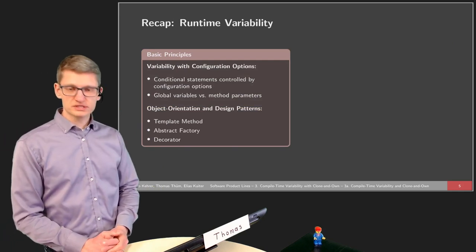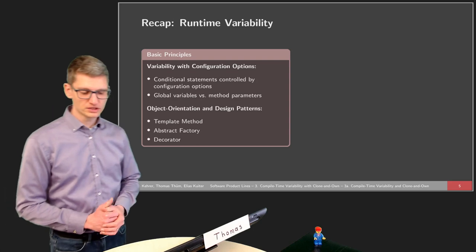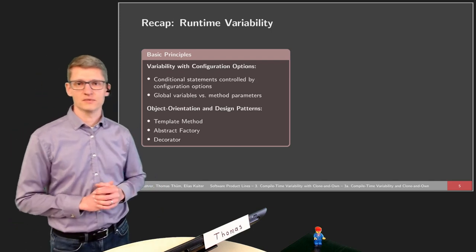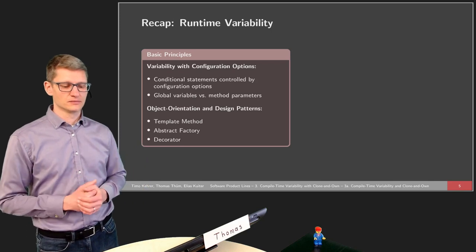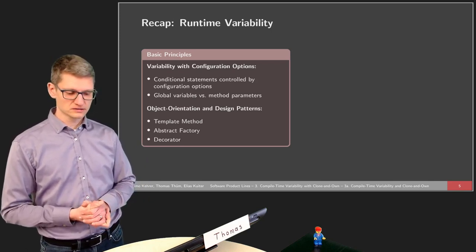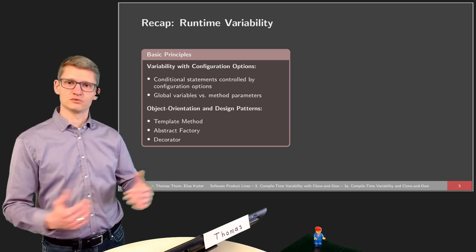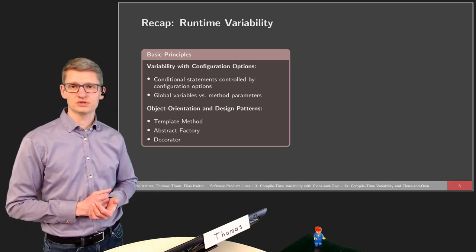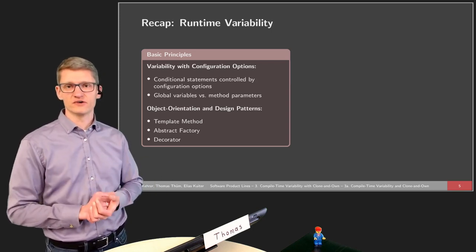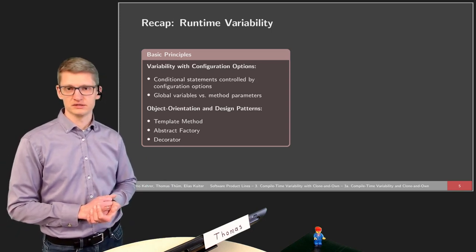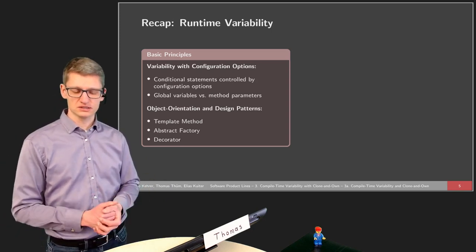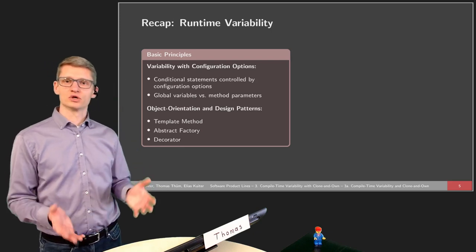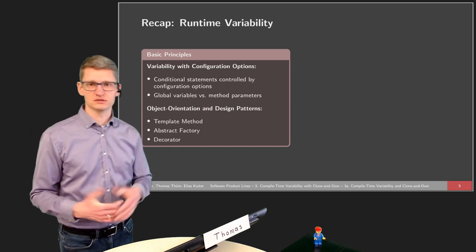Looking at the basic principles of runtime variability: we have variability with configuration options. We looked at different methods to specify configuration options — command line parameters, preference dialogues, and configuration files. Internally, the implementation uses conditional statements that control these configuration options, based on global variables or method parameters. In the last part of the previous lecture we talked about object orientation and design patterns — how we can modularize code to avoid problems with conditional statements.